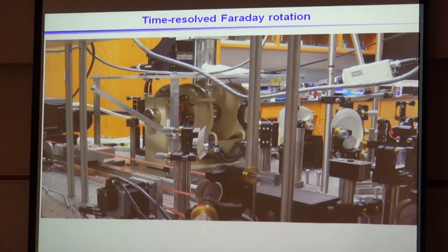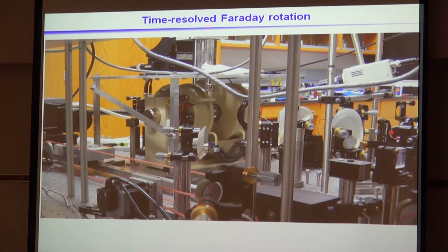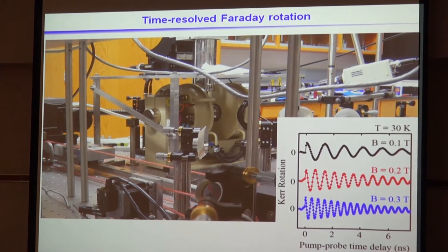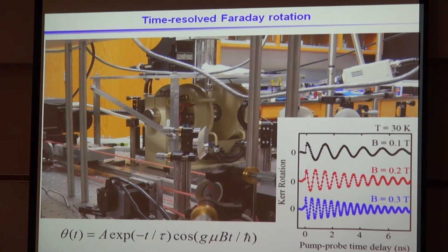In our lab we have the mechanical delay line — a cube-corner retroreflector controlled by a stepper motor — and an electromagnet. Our sample sits on the cold finger of a flow cryostat. Our typical data shows these oscillations and then the decay. If you change the magnetic field, you change the spin splitting and the spin precession frequency. We fit this data to an exponentially decaying cosine to extract both the g-factor and the spin lifetime.